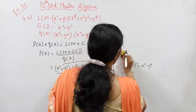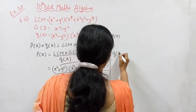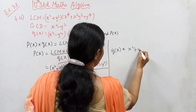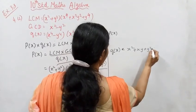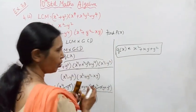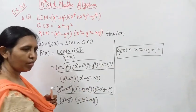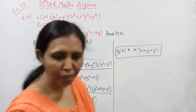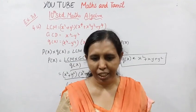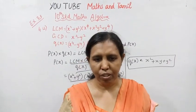So Q of x equals x squared plus xy plus y squared. This is the value of Q of x. Subscribe to this channel and click the bell button.